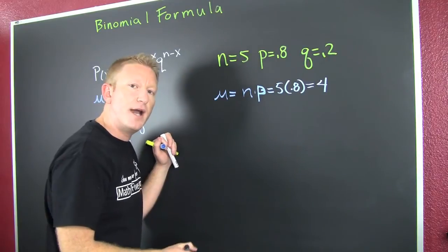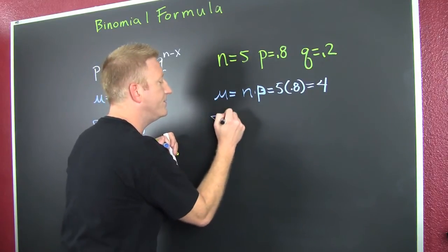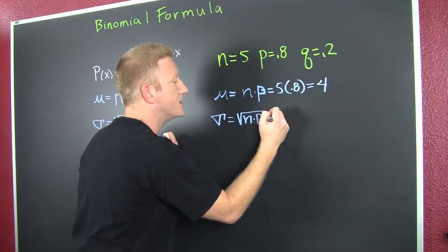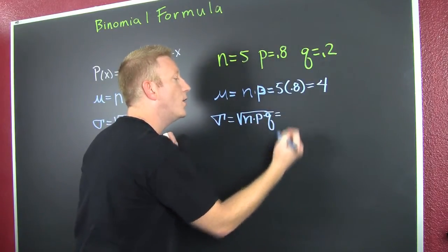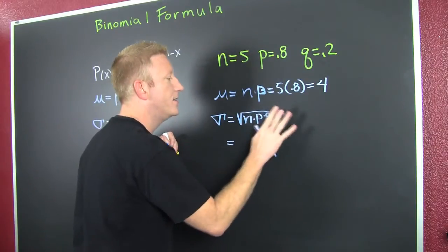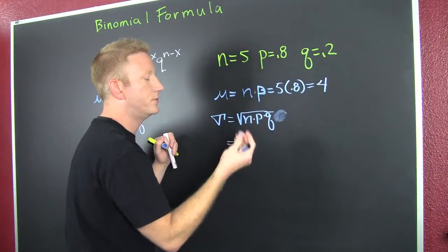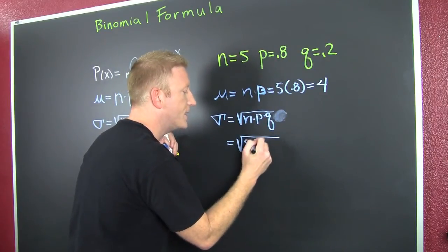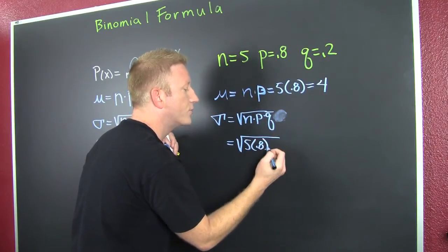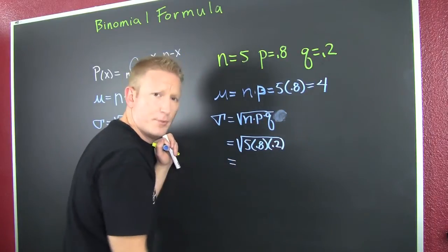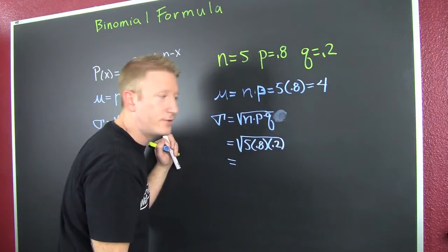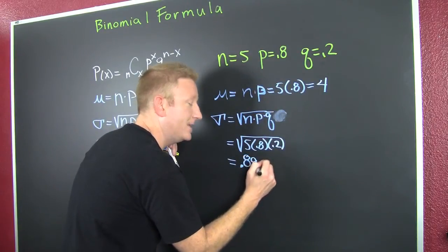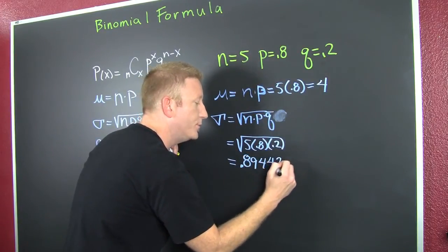Let's get our standard deviation for this binomial distribution. The standard deviation is the square root of n times p times q. So when I throw those in there, I'll put it right here. So then this is the square root of 5 times 0.8 times 0.2. And I put that into my calculator and I pound it out. And I found out that that's going to be 0.89427.